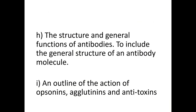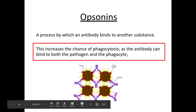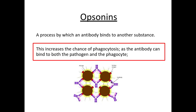We've done lesson objective H looking at structure and general function. We now look at more specific functions of the antibody. Opsonins: an opsonin is a process by which an antibody binds to another substance. In this diagram you can see the antibodies bound to antigens on the cell surface membrane of a pathogen, due to the complementary and specific areas of the variable region. Opsonins increase the chance of phagocytosis, as the antibody can bind to both the pathogen via the variable region and the phagocyte via the constant region, therefore aiding phagocytosis.